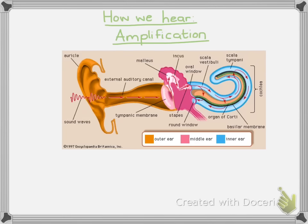When we explain hearing, we need to mention first of all the route in which the sound waves take. The sound waves are trapped by the pinna, they are then transported down the auditory canal, and then they make their way to the tympanic membrane. At this point you will need to explain what amplification is — a basic definition is taking a sound and making it louder and clearer.